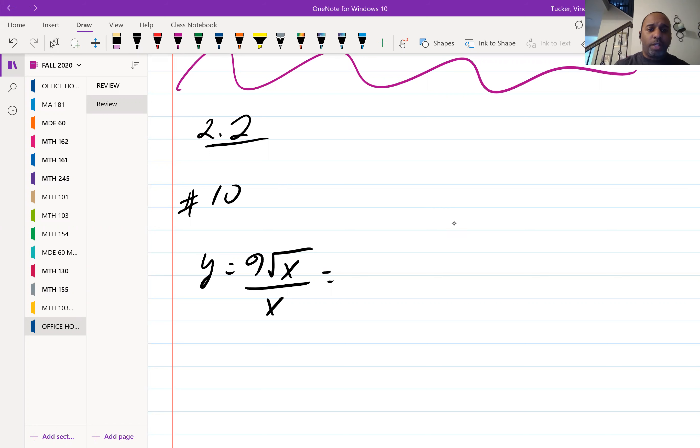Here we have y equal to 9 square root of x over x, and they want us to differentiate the function. So the first part, they want us to rewrite the problem, and we recognize that square root as an exponent is x to the one-half. Now none of this is calculus, this is all algebraic rules, talking about your exponent rules.